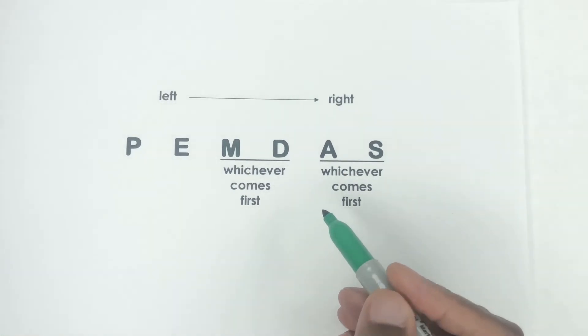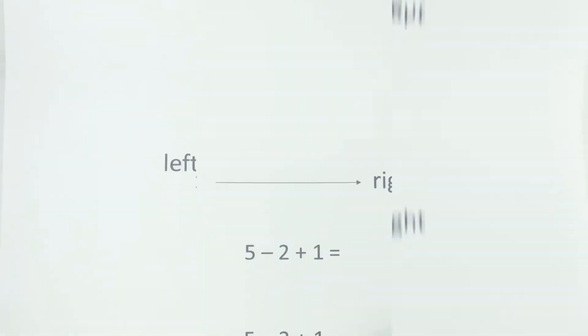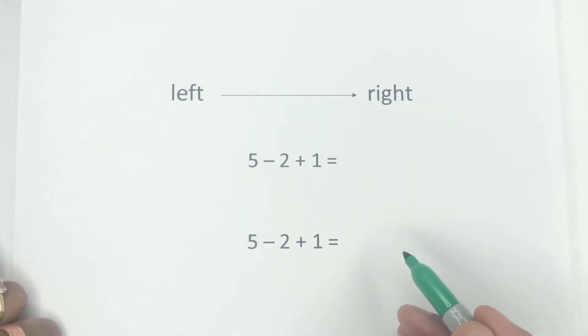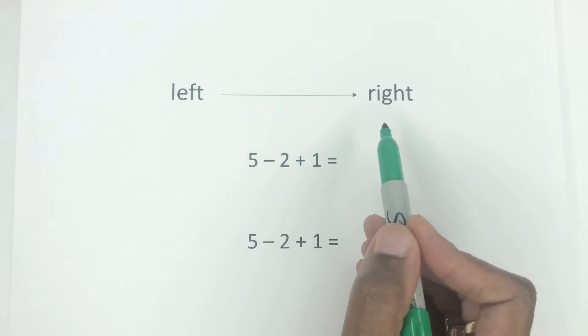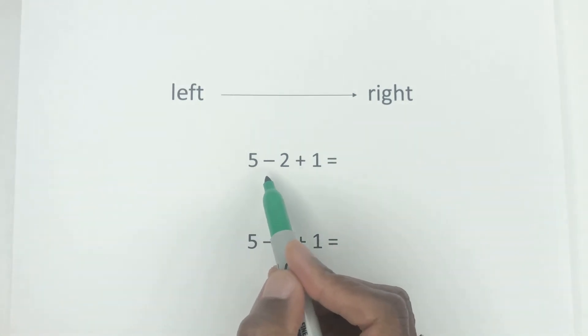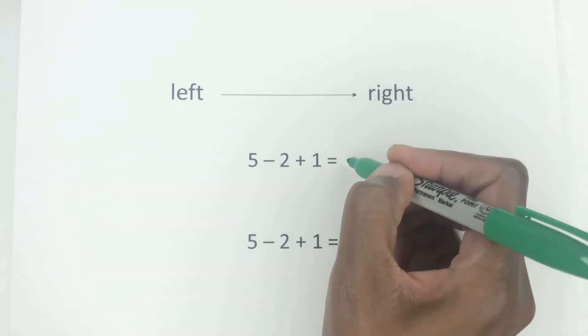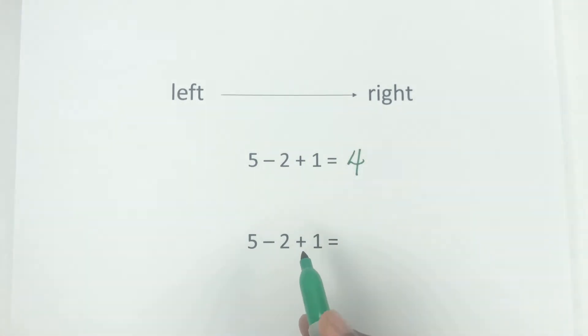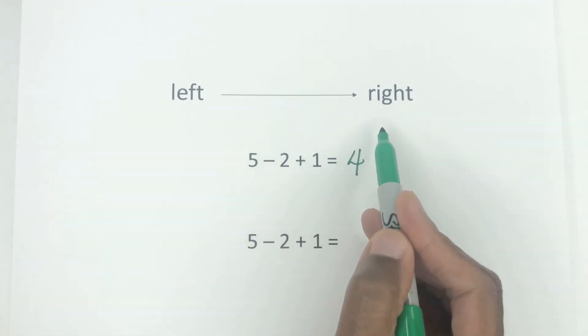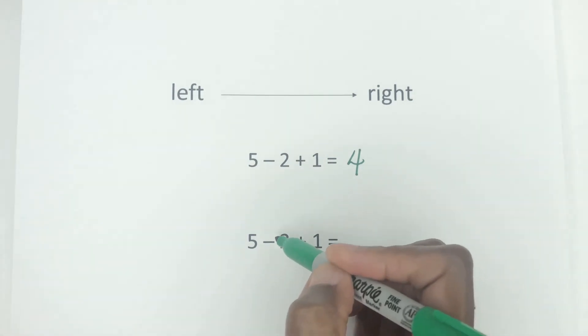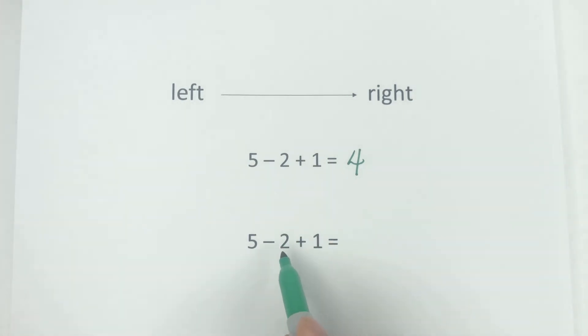Take a look at this one. So if we go back to the original question that I had at the beginning, always remember the left to right. So 5 minus 2 is 3, plus 1 is 4, right?